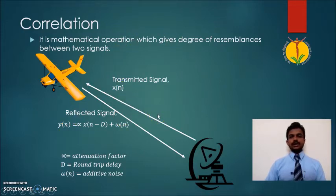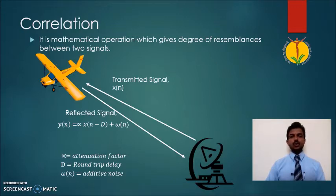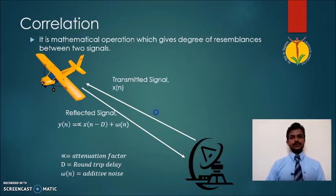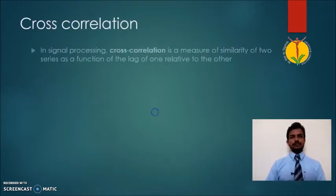Similarly, if we consider the example of image processing — when we want to compare two images and find out the similarity between them, correlation can be used. So it has large applications in signal processing. Let us see how correlation can be represented mathematically.